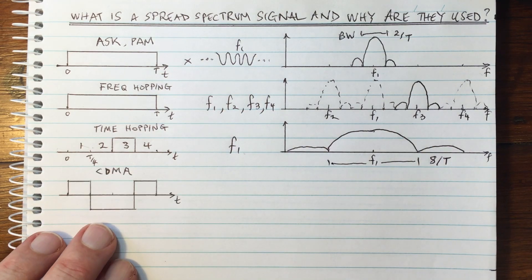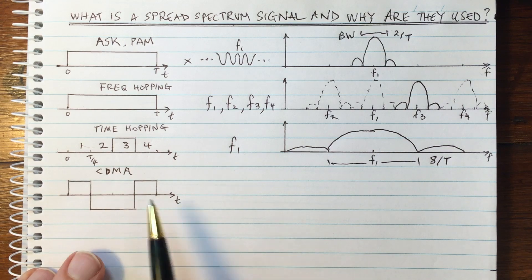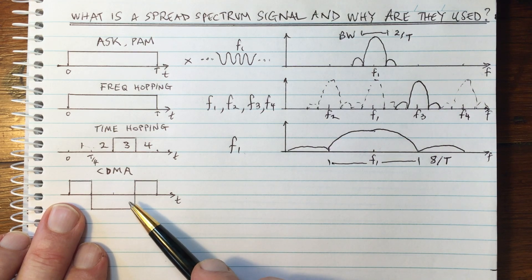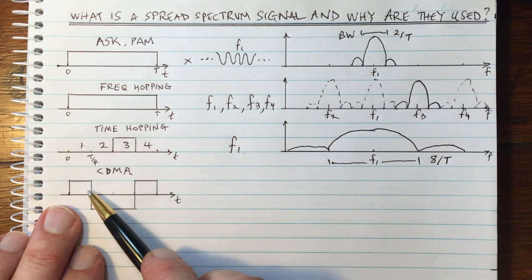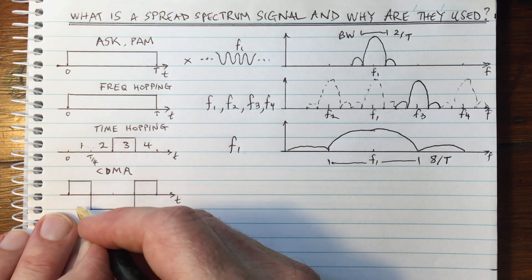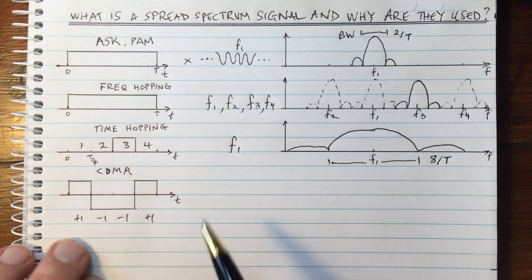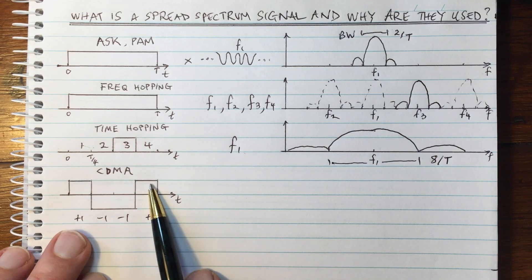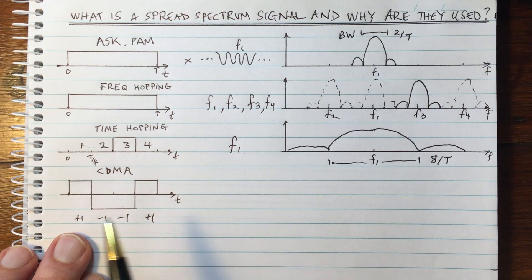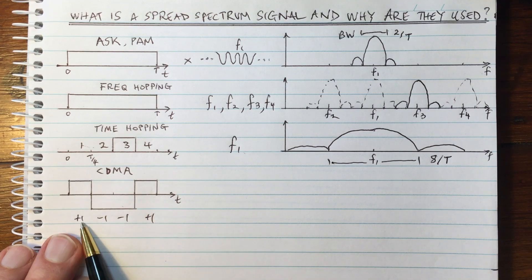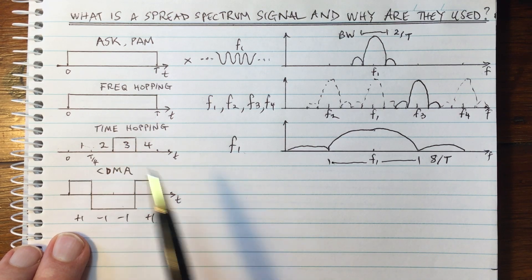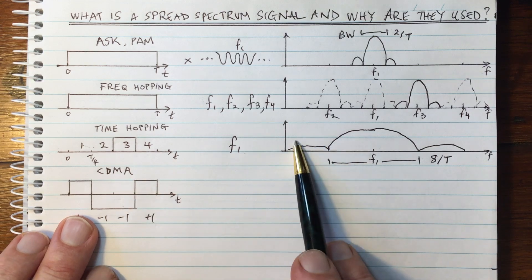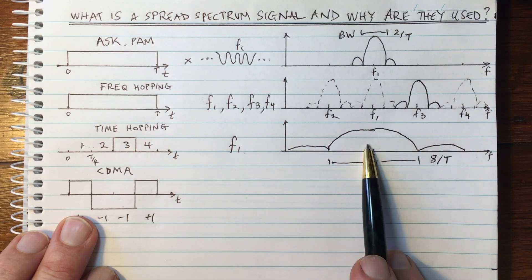And the third main way of doing it is what's called code division multiple access. And in this case, we are going to be using all of the time slots and all of the frequencies. So in this case, what we do is we take our time and we put a randomized code. So in this case, it is plus one, minus one, minus one, and plus one. And we just multiply our symbol period in the time domain. We multiply it by this randomized code, which changes at a faster rate. And of course, here I've shown it with four elements of the code. And that means that just like with time hopping, we're going to be spreading out in the frequency domain. So the Fourier transform of this, the frequency usage of CDMA, is the same here as it is for time hopping.